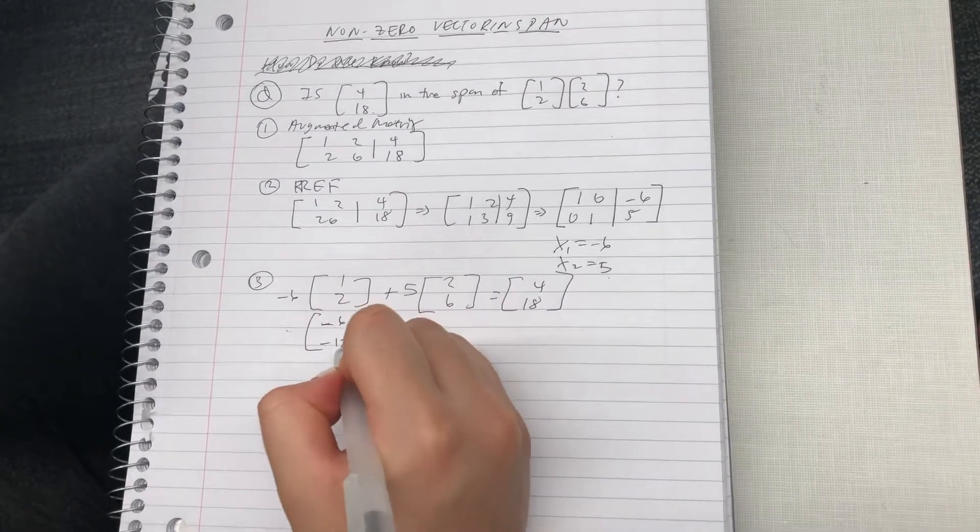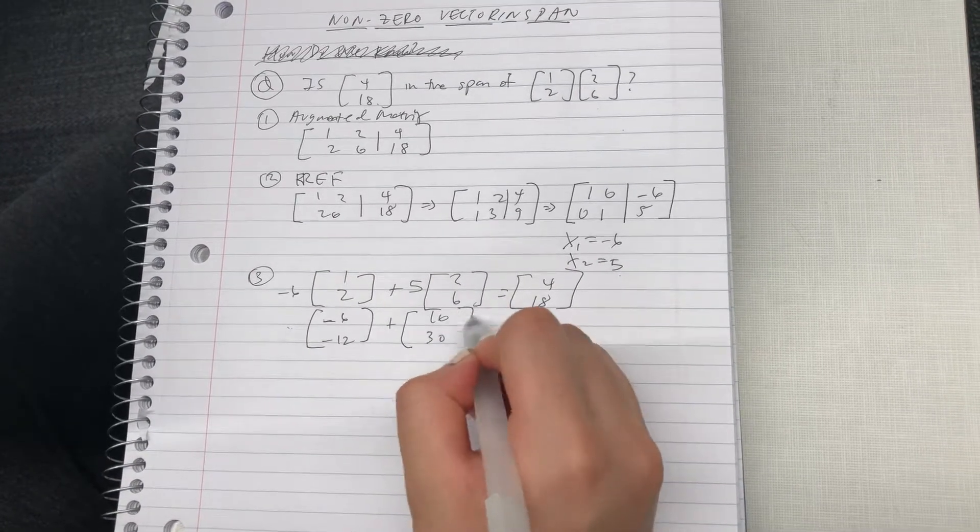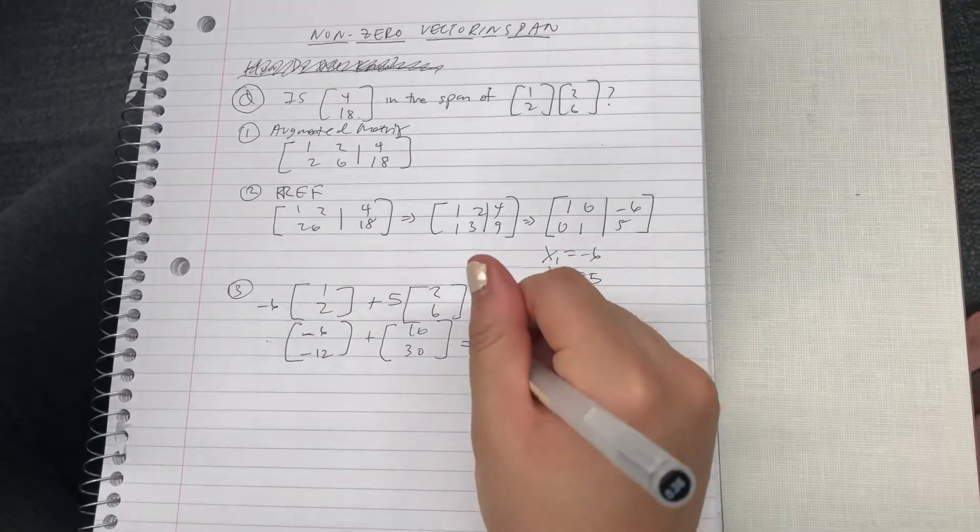Negative 6, negative 12, plus 10, 30. If you know how to do addition, then it becomes 4, 18.